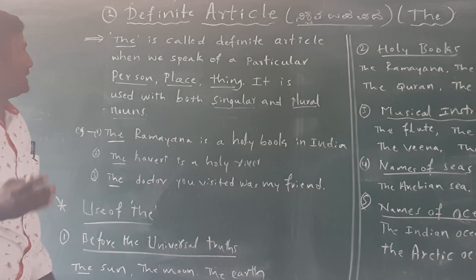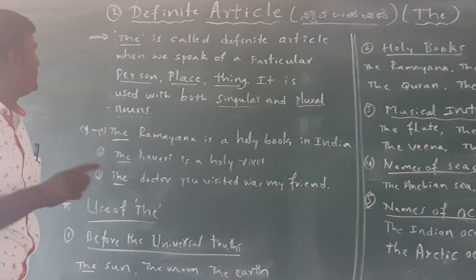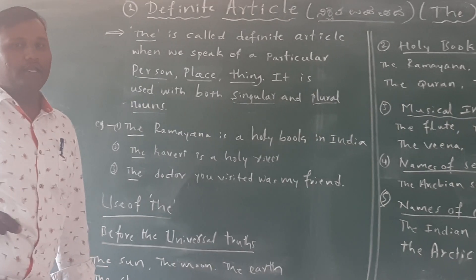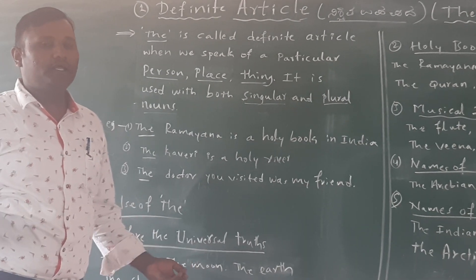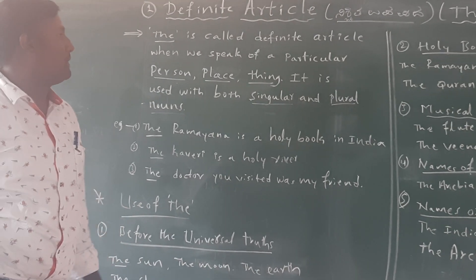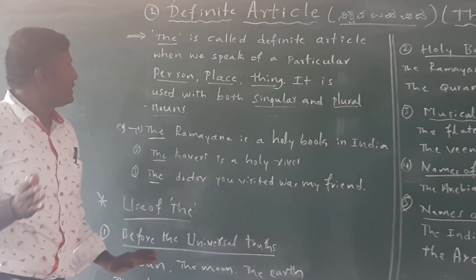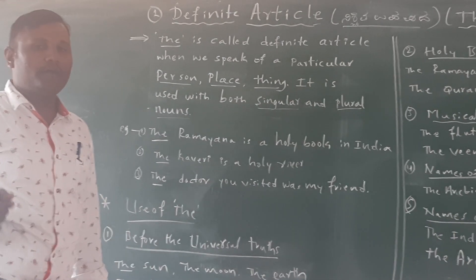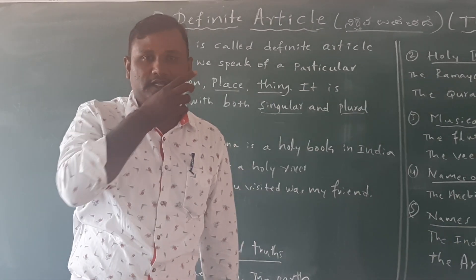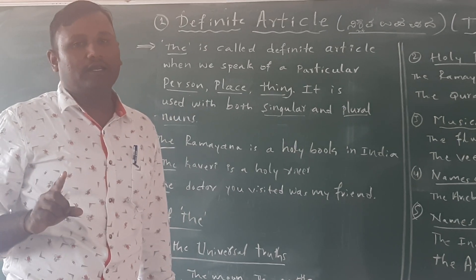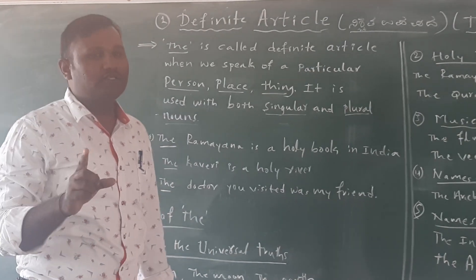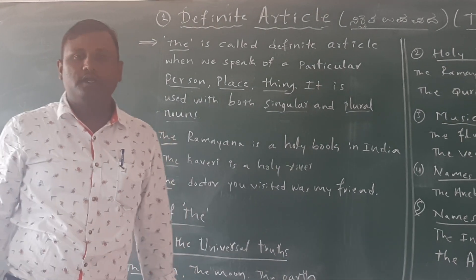What is definite article? 'The' is called definite article. Because when we speak of a particular person, place, or thing, that is called definite article. Definite article means 'the' is called definite article.